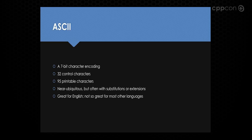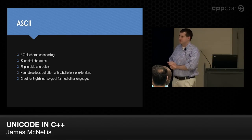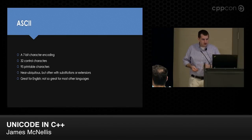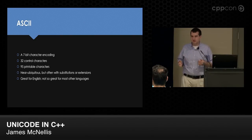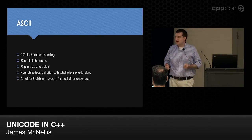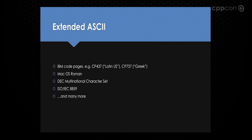ASCII is near ubiquitous and used in many environments — Unicode is based on it. It's great for English but not so great for other languages, because other languages have many characters beyond the 95 printable characters. One nice thing about ASCII is that it's only a 7-bit encoding, so with an 8-bit byte we have an extra 128 values we can use. So we have what are called extended ASCII encodings. IBM came up with a set of code pages, and Mac OS Roman is a commonly used code page on Mac OS.